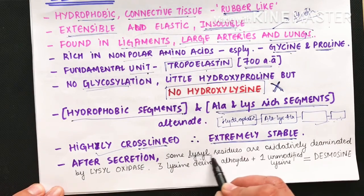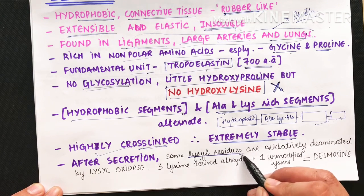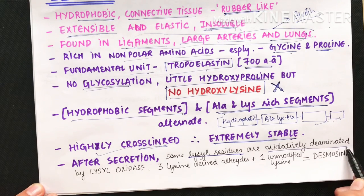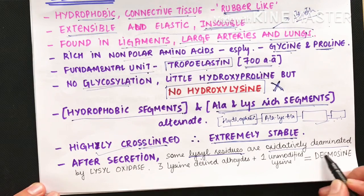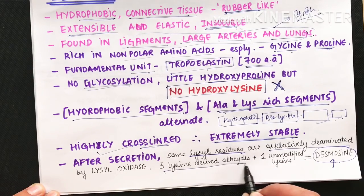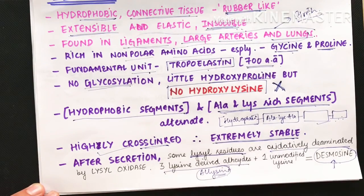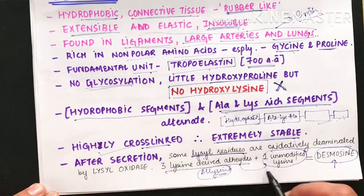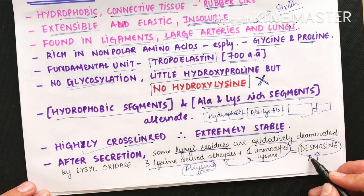After secretion, some lysine residues are oxidatively deaminated, forming an unusual amino acid called desmosine in the extracellular matrix. Desmosine is made when three lysine-derived aldehydes (allysine) and one normal lysine condense together, forming this unique cross-link found only in elastin.